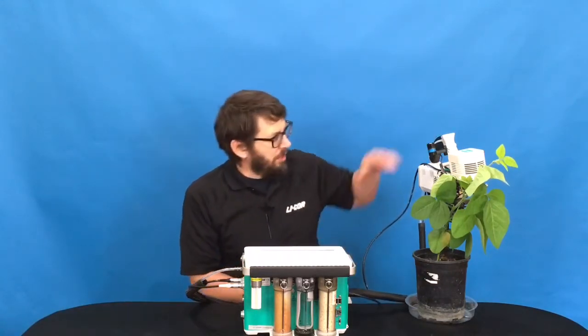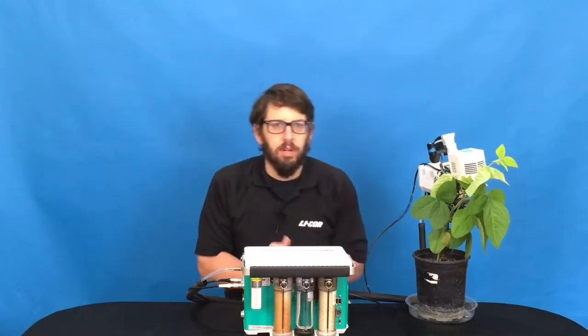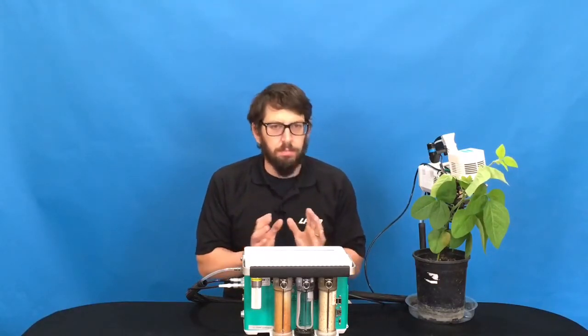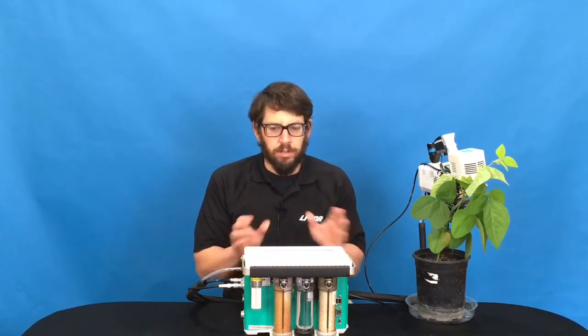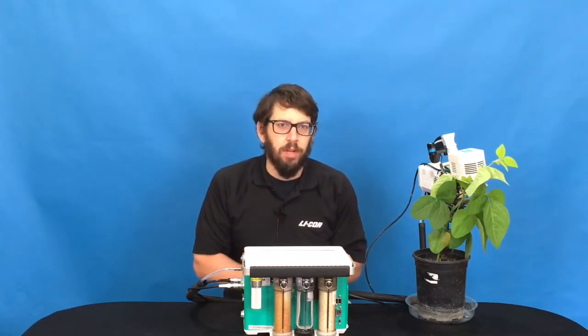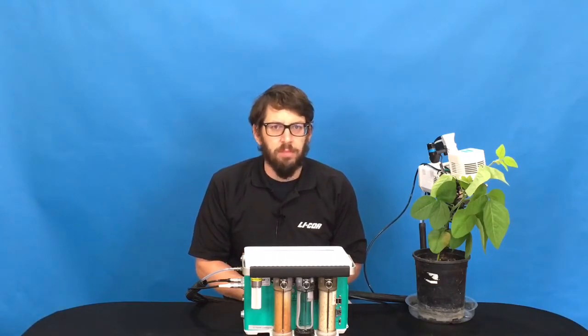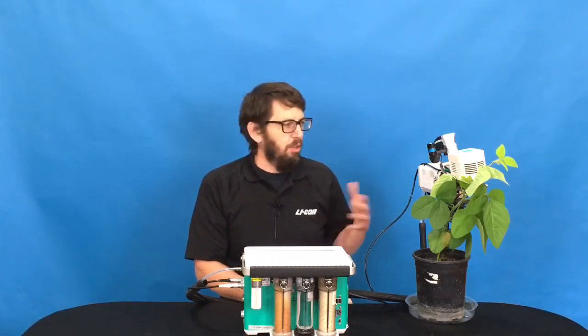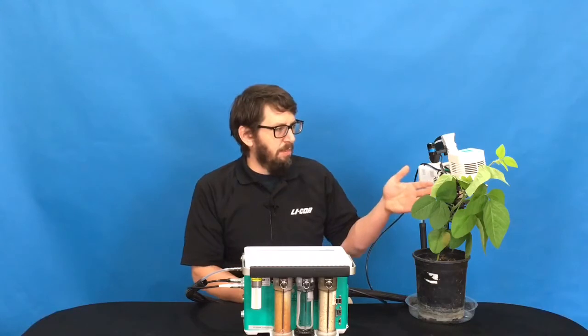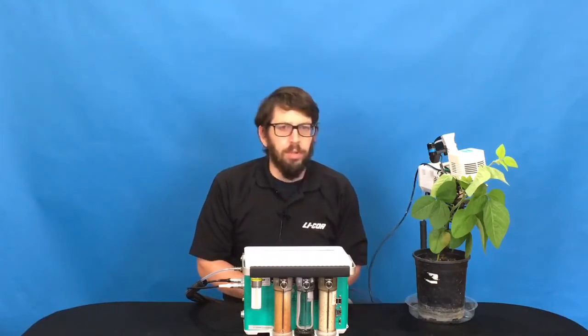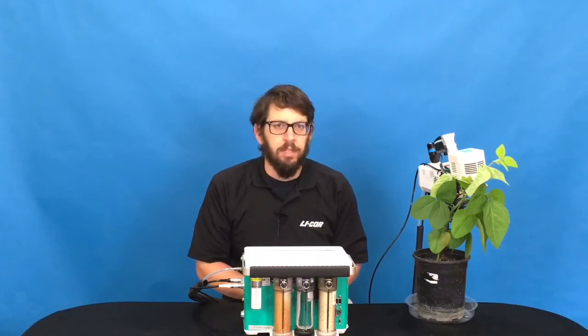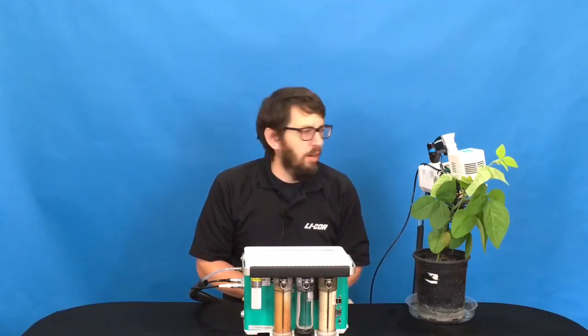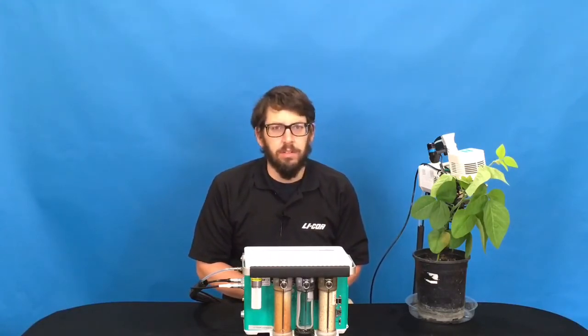So for today's demo we have the fluorometer chamber on board. Some quick important considerations to make when setting up for a survey measurement include thinking about the environment that your plant has been experiencing prior to clamping. And the most important variable typically to consider is the light environment.